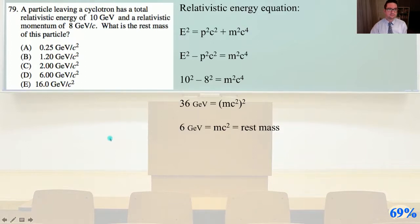79. A particle leaving a cyclotron has a total relativistic energy of 10 GeV and a relativistic momentum of 8 GeV divided by c. What is the rest mass of this particle? The relativistic energy equation, e squared equals p squared c squared plus m squared c to the 4th. So e squared minus p squared c squared equals m squared c to the 4th. And 10 squared minus 8 squared equals m squared c to the 4th.